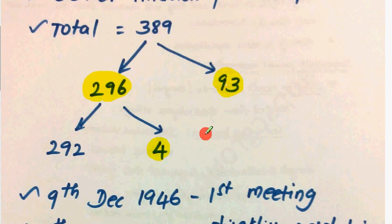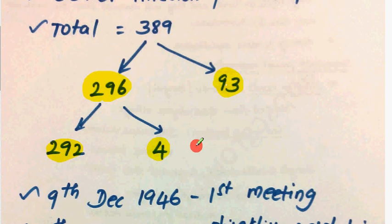There are Chief Commissioner Provinces with 4 members in the province. There are 292 members in the province. They are ordinary people — for example, Dr. Rajendra Prasad. There are 292 members and 93 people in the province.